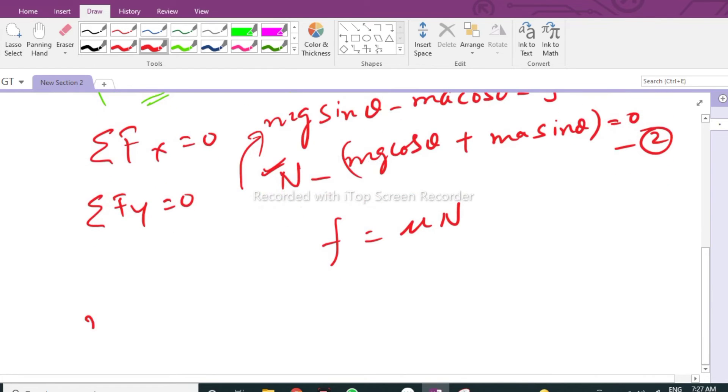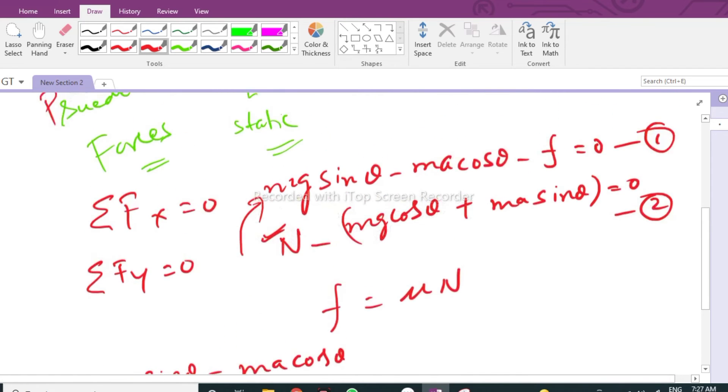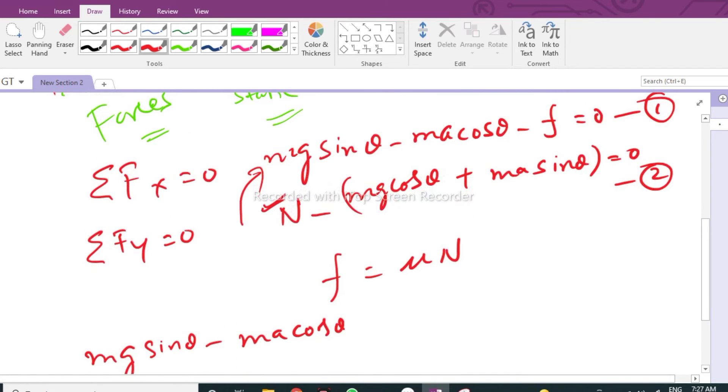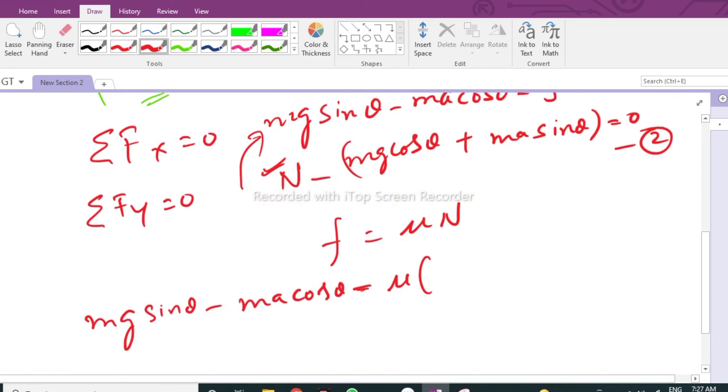So I'm directly putting that: mg sine theta minus ma cosine theta minus f, which is minus mu into N. So what is N?